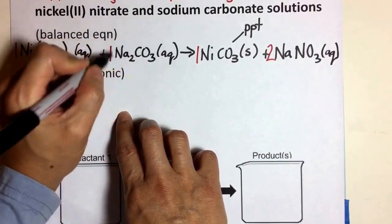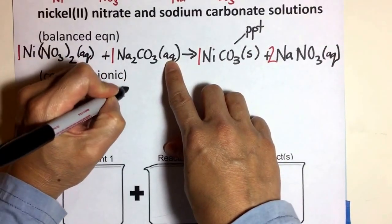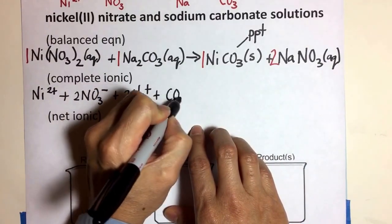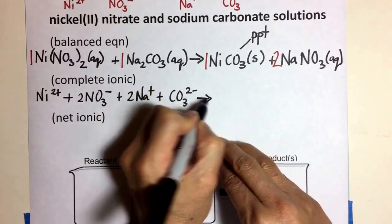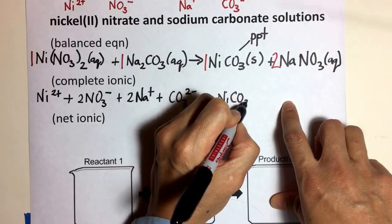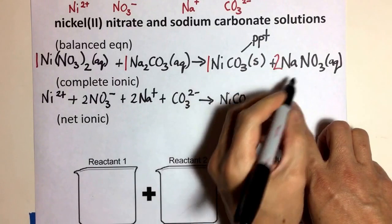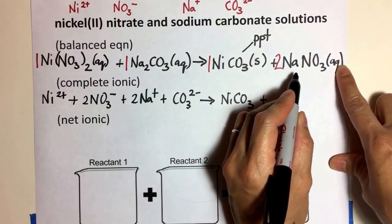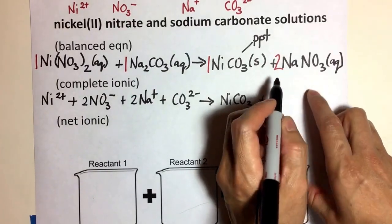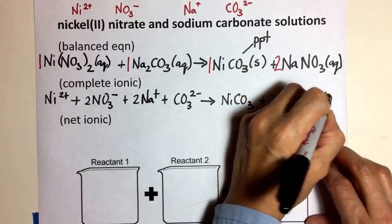When we break apart this ionic compound because it's aqueous, we then have two sodium ions and one carbonate ion. The product is a solid, so we don't dissociate that substance — solids are insoluble, they stay together. The next substance is aqueous, so I dissociate it. Notice there are two of them, so two sodium ions and two nitrate ions will be formed when they dissociate.